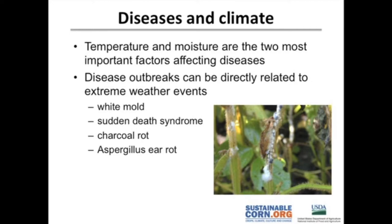Especially in Iowa in the last three or four years, we've had outbreaks of diseases on every extreme. In 2009, we had a fairly cool year and the most white mold we'd had in over a decade. In 2010, flood conditions brought the most sudden death syndrome ever in the history of soybean production in Iowa. In 2012, we're seeing charcoal rot due to heat and dry conditions, and in corn we're starting to see aspergillus ear rot.